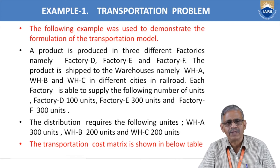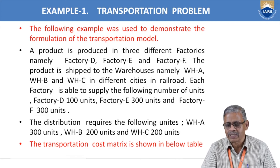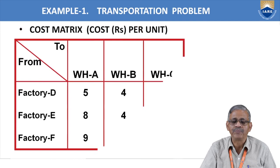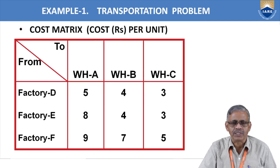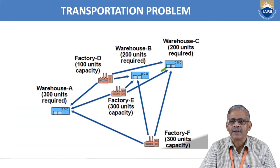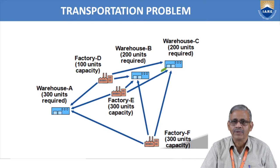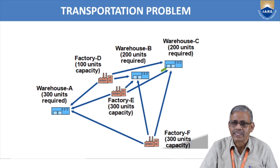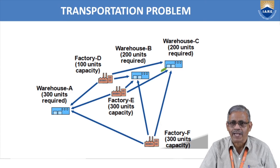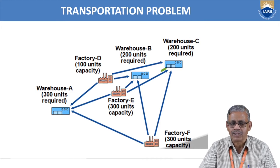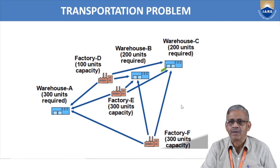We can go ahead with solving the problem. The problem can be shown pictorially as in the slide — it has three warehouses and three factories. The blue ones are warehouses and the red ones are factories, with capacities and requirements shown nearby.